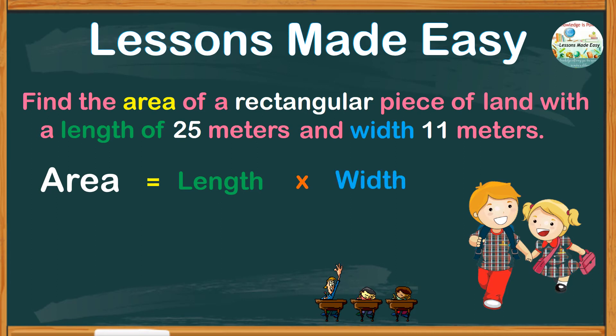Then substitute the values. Area equals 25 meters for the length, 11 meters for the width. Then multiply. So area equals the product of 25 and 11, which is 275. And the unit meters was used twice, so this will come with 2 as the exponent. Finally, we have an area of 275 square meters.